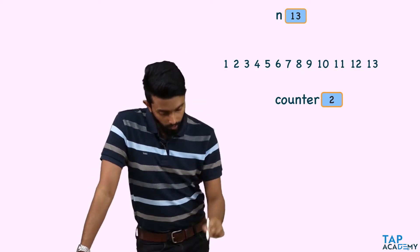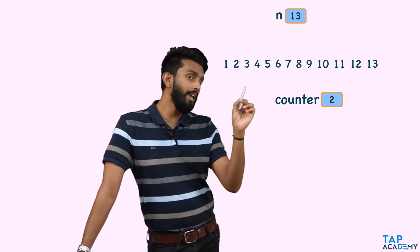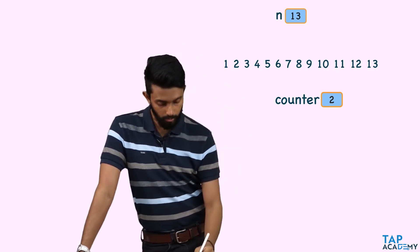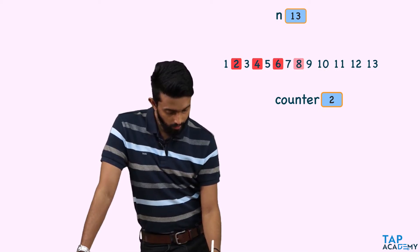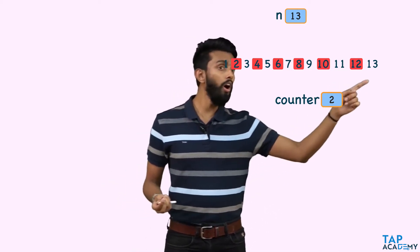If the counter value is 2, then every second element is unlucky — meaning 2, 4, 6, 8, 10, 12 are all unlucky. And luckily, your number 13 is not part of the unlucky numbers.